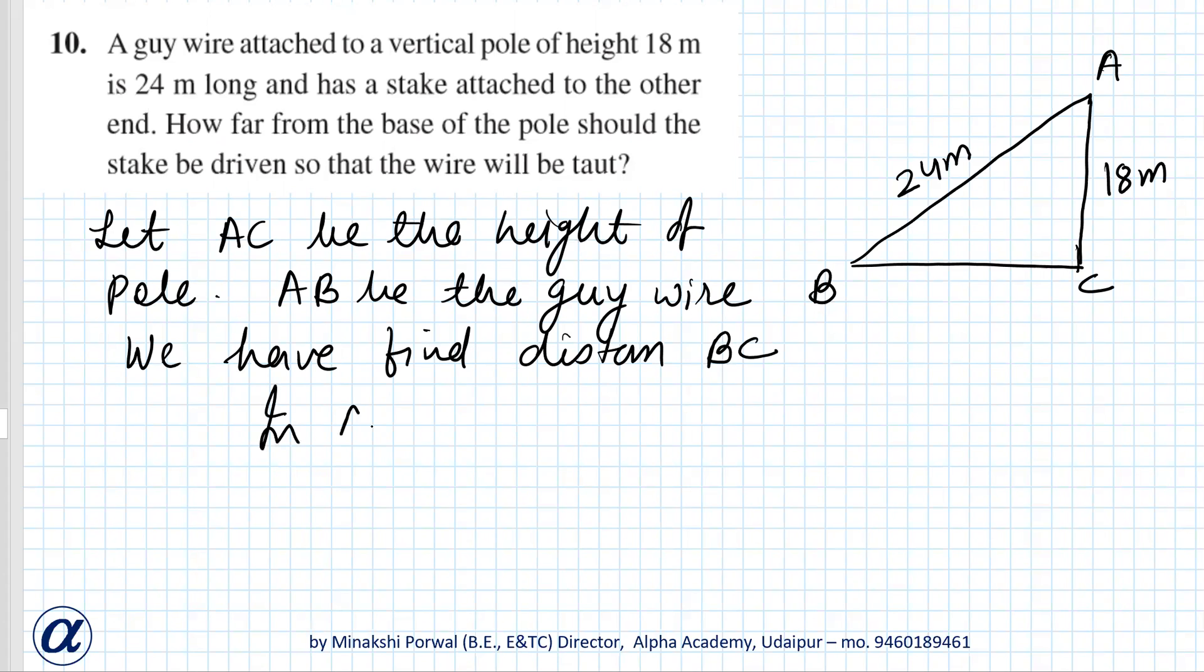So same as previous question in triangle ABC, AB square equals to AC square plus BC square. This is 24 square equals to 18 square plus BC square, or BC square is equal to 24 square minus 18 square.